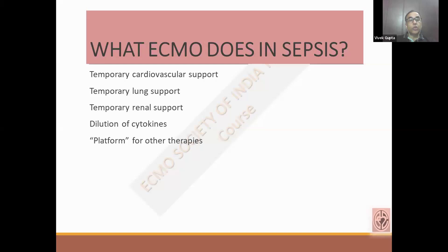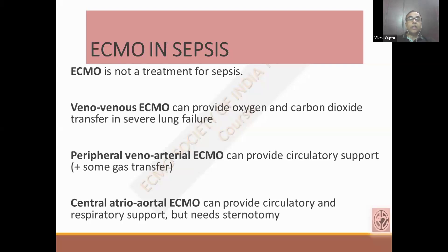How can ECMO be helpful? First, it provides temporary cardiovascular support. It can also give temporary lung support. Because it improves perfusion, it can prevent further organ damage, and support the kidney by improving oxygenation and tissue perfusion during VA ECMO. It also helps in diluting cytokines and can provide a platform for other therapies like the use of cytosorbents or CRRT to decrease toxin load. But remember, ECMO is not a treatment for sepsis. VV ECMO improves gas exchange in severe lung failure secondary to sepsis. Peripheral VA ECMO provides circulatory support, though it may or may not match the body's needs. Central VA ECMO can provide both circulatory and respiratory support, but it requires sternotomy.